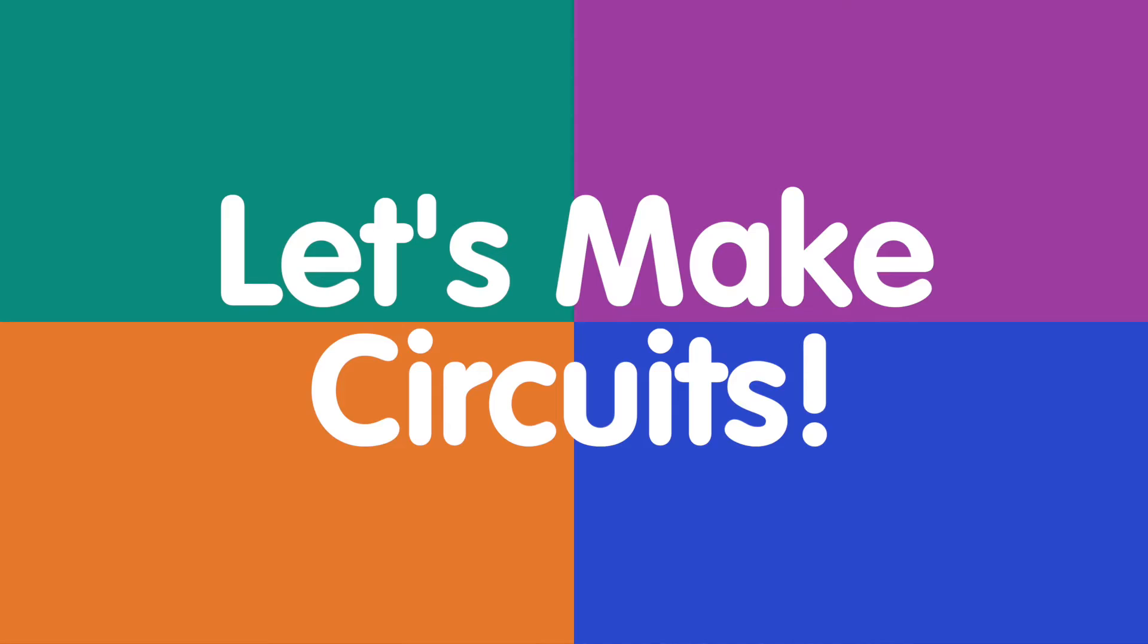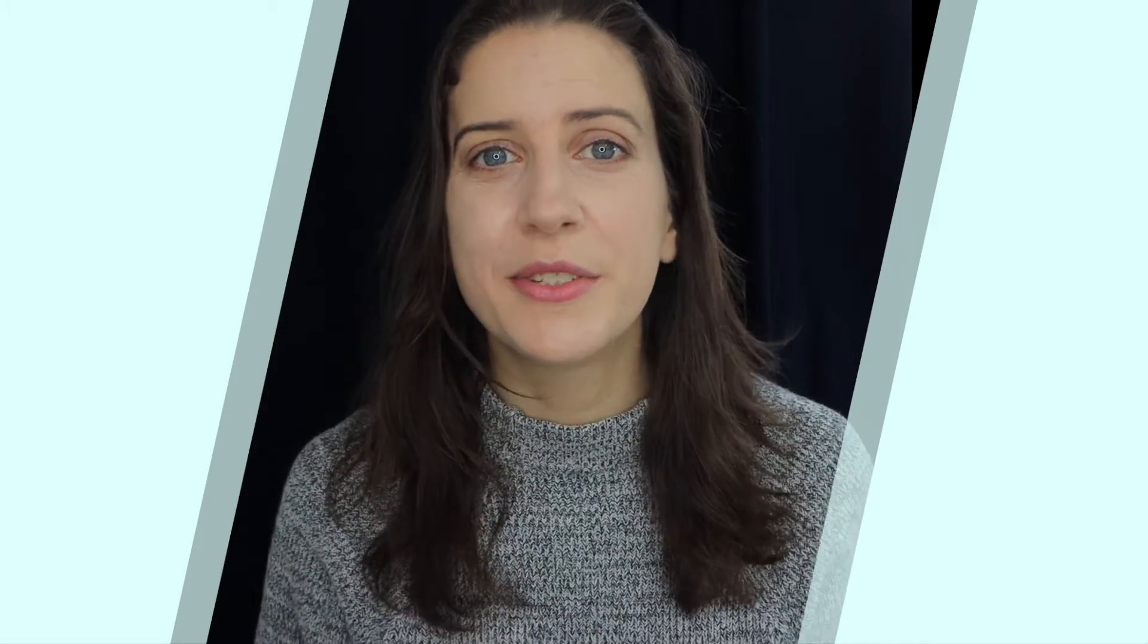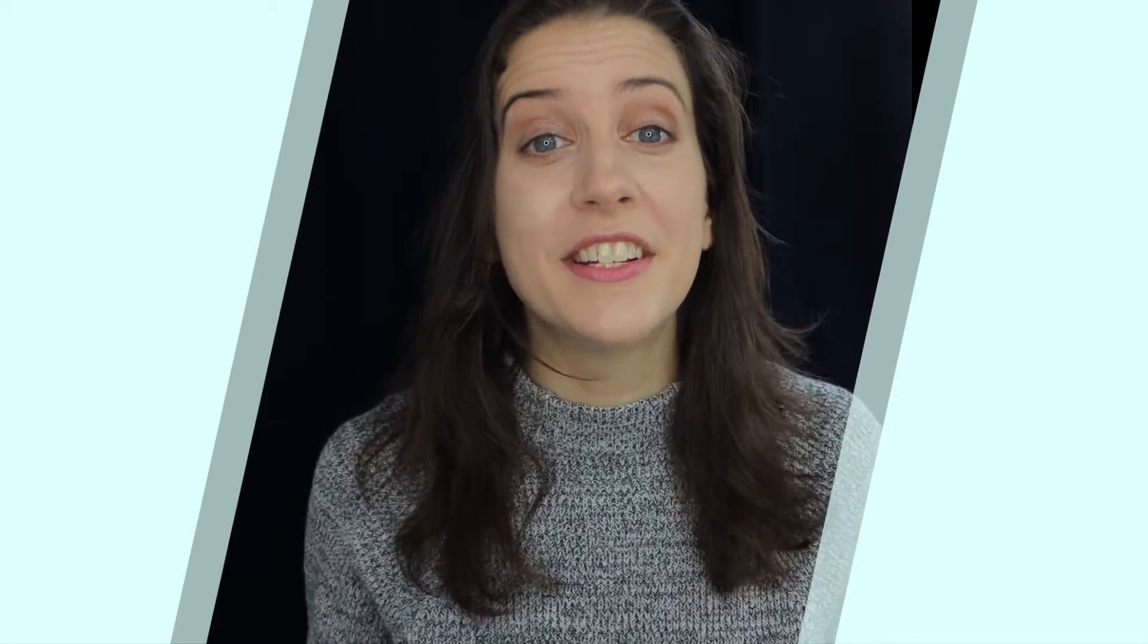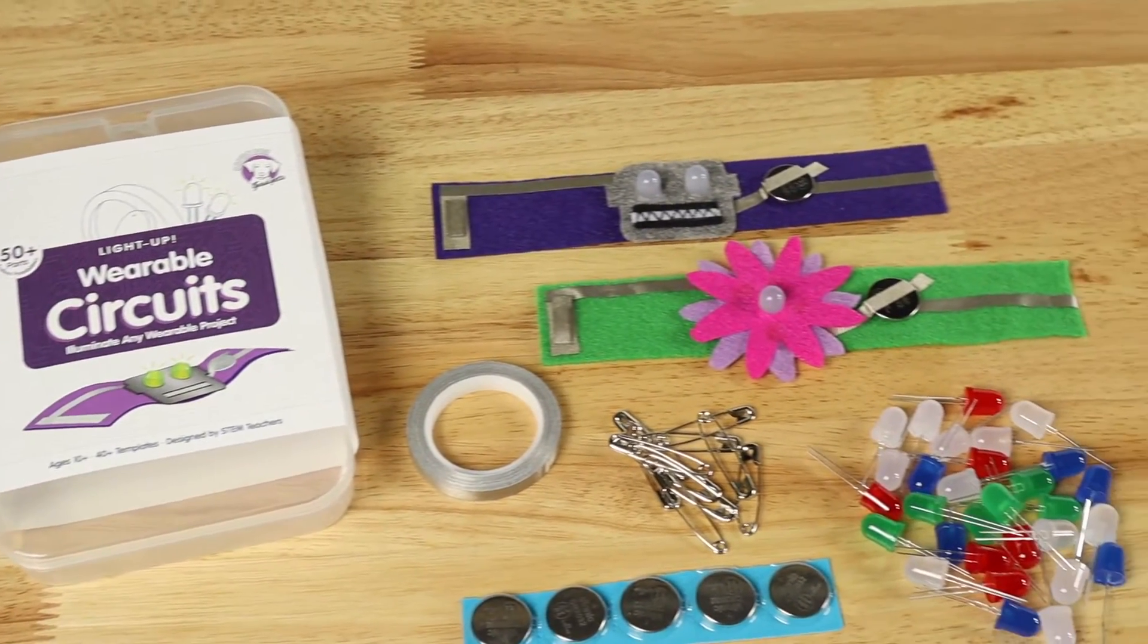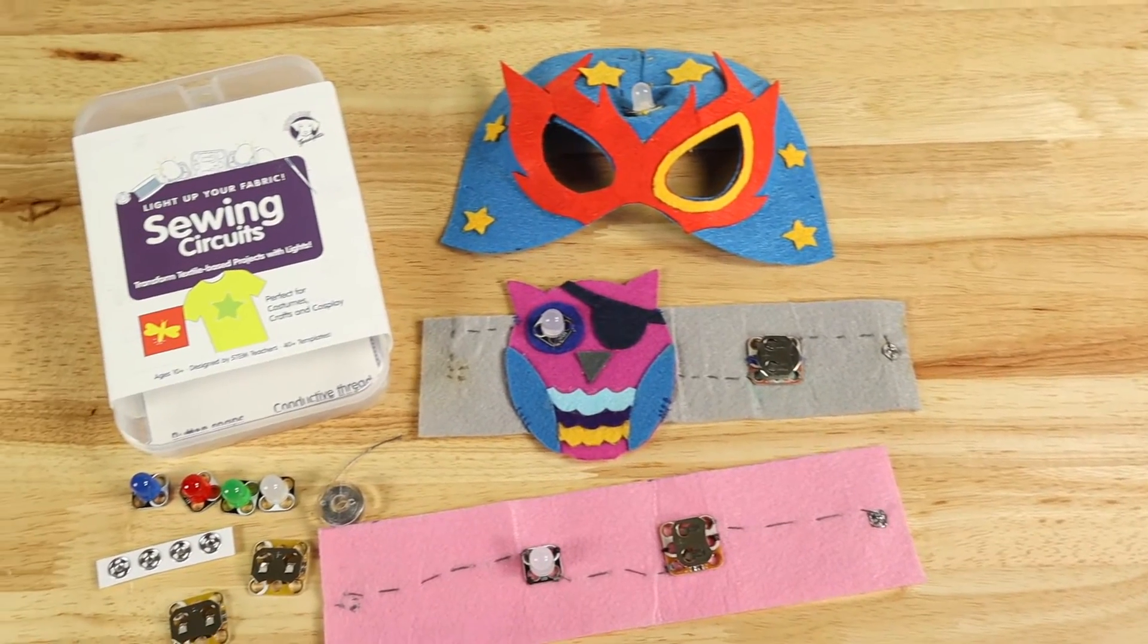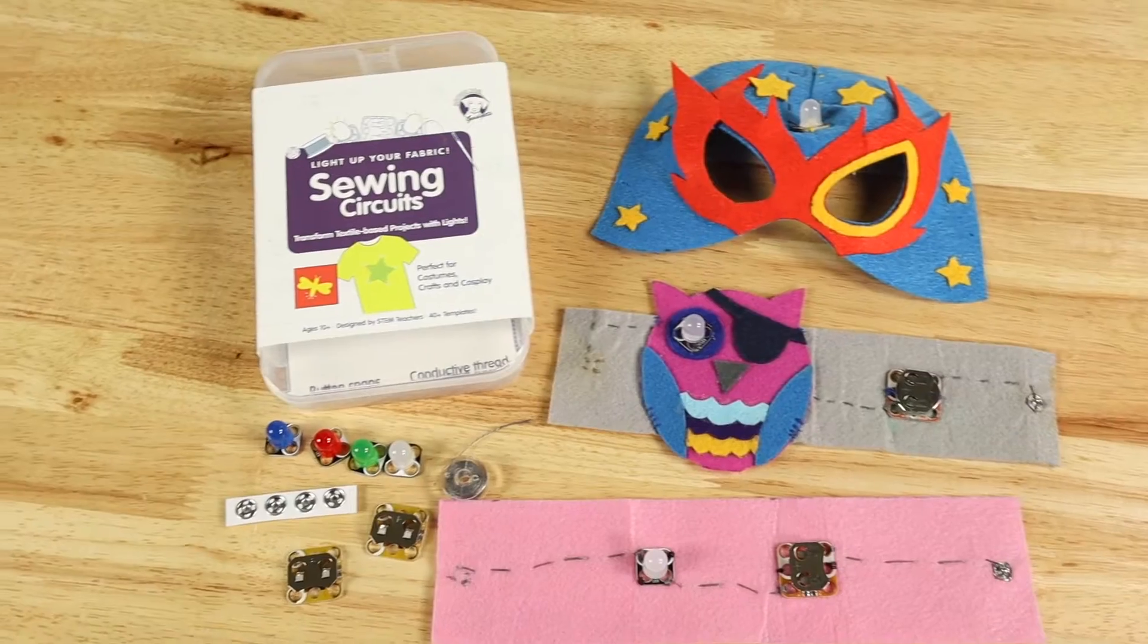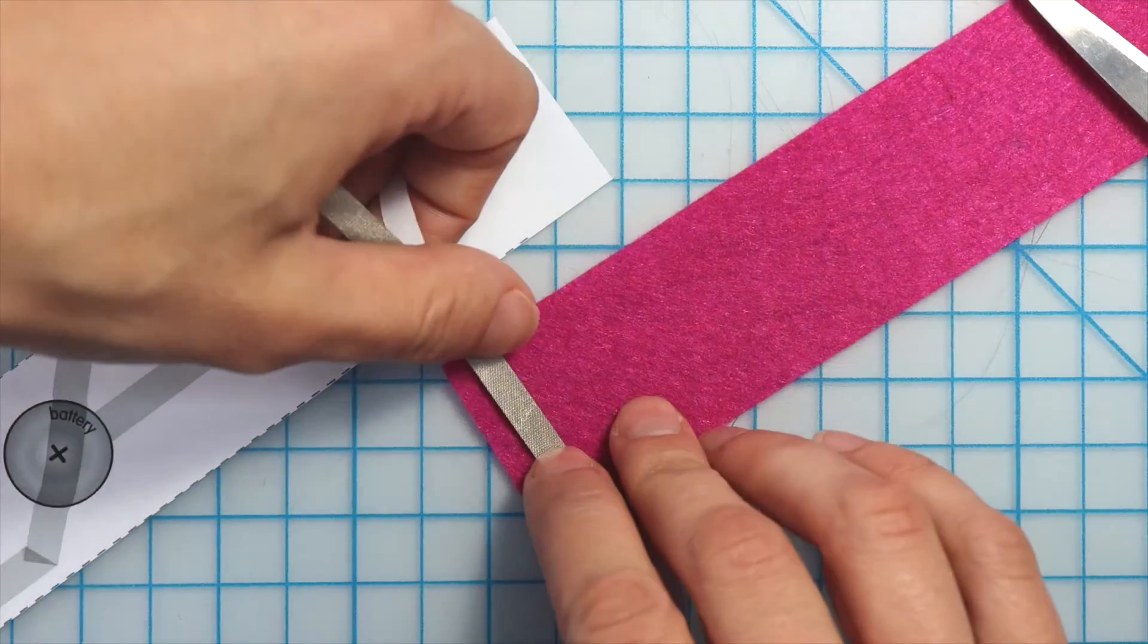So let's make circuits. I'll show you how to make a light-up bracelet with one or two LEDs using both the maker tape and conductive thread methods. The electronics needed to make the maker tape bracelet are available in the wearable circuits kit and the electronic materials needed to make the conductive thread bracelet are available in the sewing circuits kit. Let's start with the maker tape bracelet with one LED.